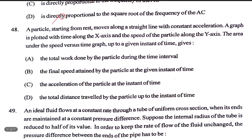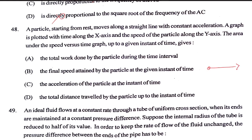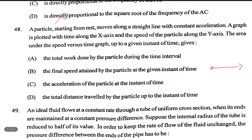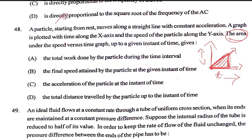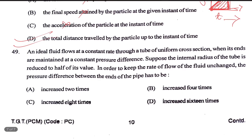A particle starting from rest moves in a straight line with constant acceleration. A graph is plotted with time along the x-axis and speed along the y-axis. The area under the speed vs. time graph represents displacement. The slope gives acceleration, and the final speed is read off the y-axis. D equals the total distance covered by the particle.